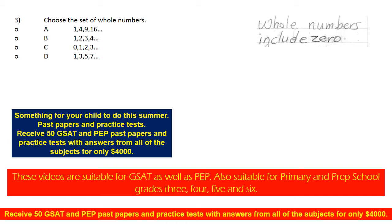Let's check C: 0, 1, 2, 3, and so on. Yes, that includes 0. So that is the set of whole numbers. It includes 0. So that is the set of whole numbers. But let's check D.